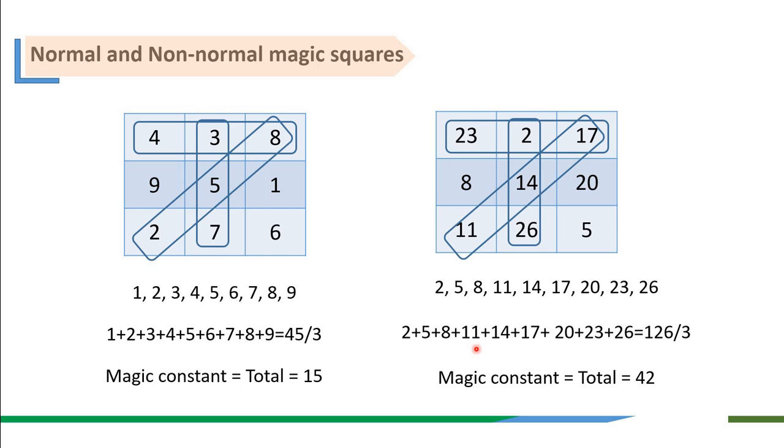In the left magic square, when it is a normal magic square, if we see the numbers, it is in a sequence from 1 to 9. In the right side, the numbers are not consecutive numbers. They are a shifted sequence. That is, each next number is the addition of 3 to the earlier number: 2+3=5, 5+3=8 and so on.